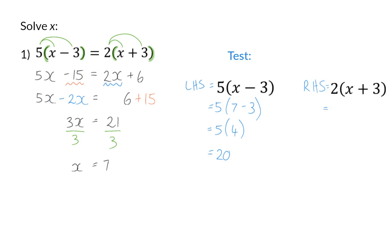On the right hand side, I have 2 and in my bracket, once again, my 7 plus 3. And this means I have 2 times 10, which also gives me 20. And because the two values I got for the left and right hand side are the same, I know that my value for x is correct.